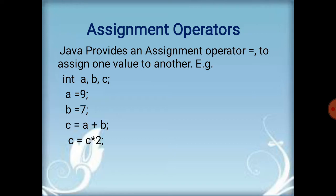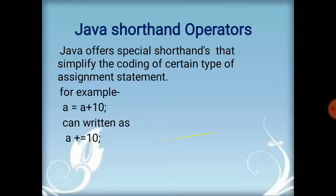We can again assign c in another way: c is equal to c into 2. This assigns the value of c itself multiplied by 2. In this way, we use the assignment operator in Java.